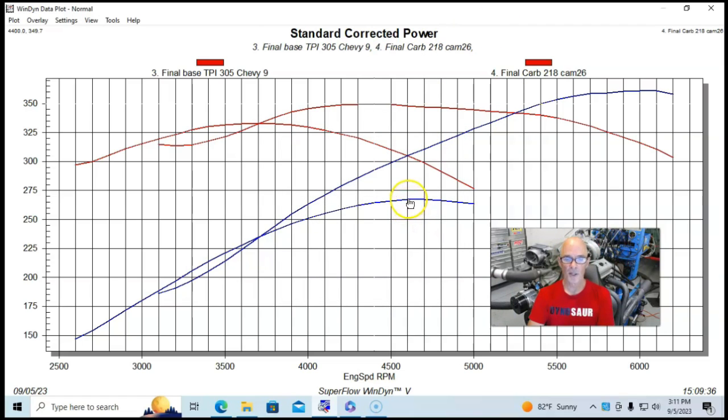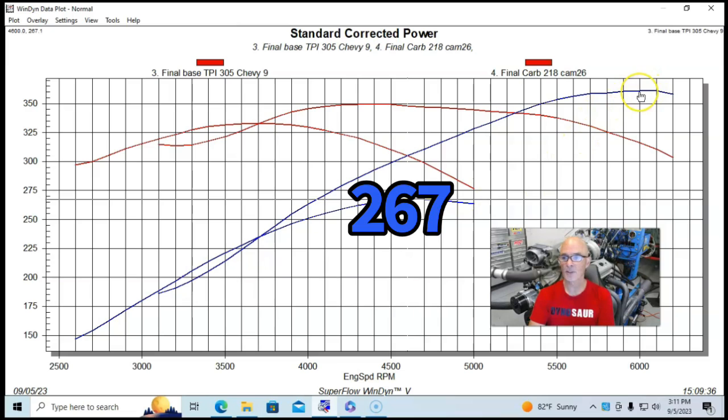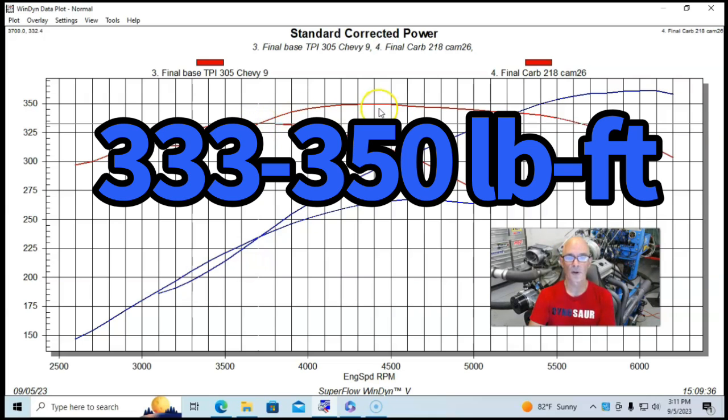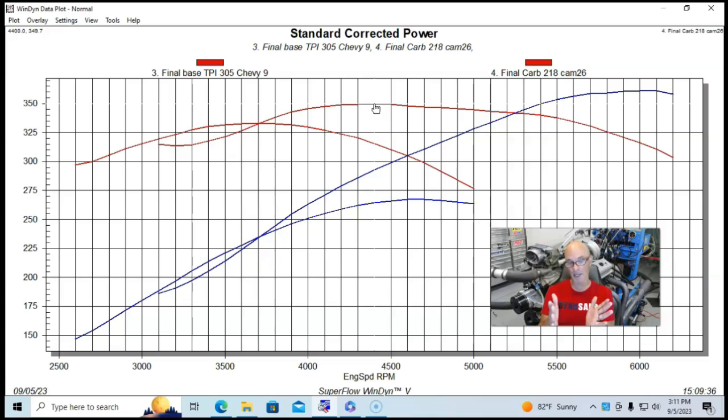So we jumped up from 267 up to 361, nearly 100 horsepower. Peak torque, very good with the tune port motor, 333, up to 350 foot-pounds. So now let's take a look at combination number two, where we did a fairly similar deal. We started off with a kind of a stock combination, and then modified it with heads, cam, and intake.